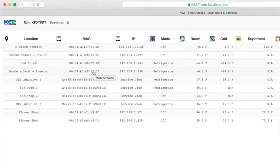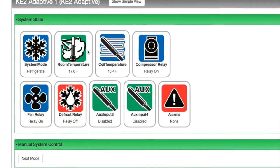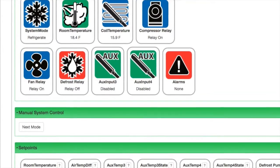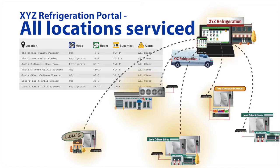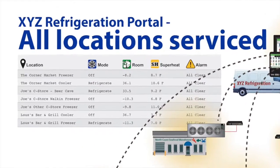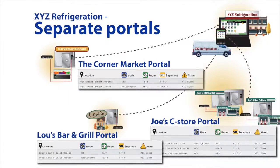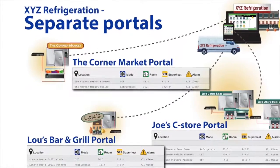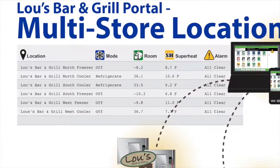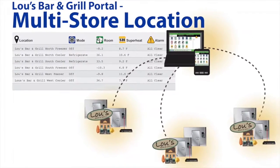For more in-depth information on a particular controller, you can click on that individual controller, which brings you to the controller's web pages. If you're a refrigeration contractor, you can have a portal with all the sites you service, or have separate portals for each customer. We've also had several end users and facilities managers who use Keto Smart Access to check on multi-store locations.